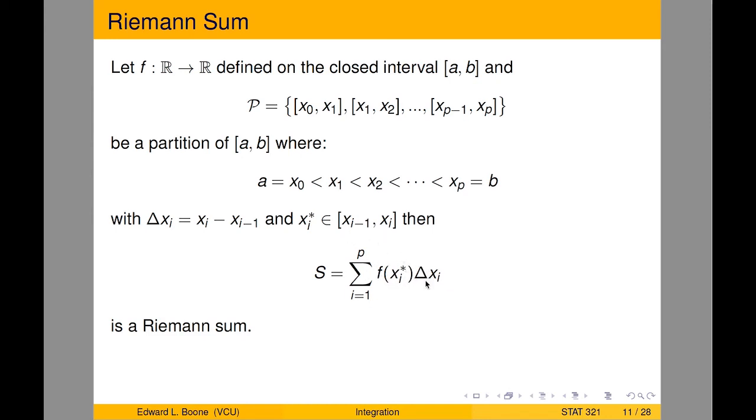So we have a height, we have a width, and all we do is we add up all of these little rectangles, and we end up with a Riemann sum. And this is the general definition of a Riemann sum.